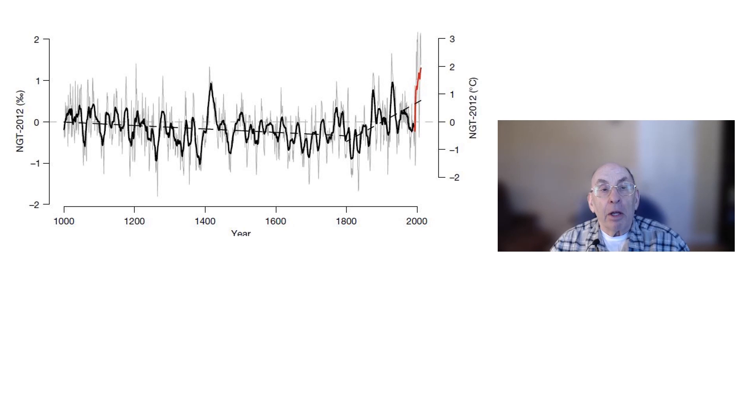This figure shows a reconstruction of the temperature record from central and north Greenland from the Nature paper. This reconstruction, called NGT 2012, was derived from ice cores recently drilled at several locations in central and northern Greenland. The heavy black line shows the 11-year running mean of the ratio in parts per thousand of the abundances of the stable oxygen isotopes oxygen-18 and oxygen-16 in the water molecules that make up the ice, left axis.